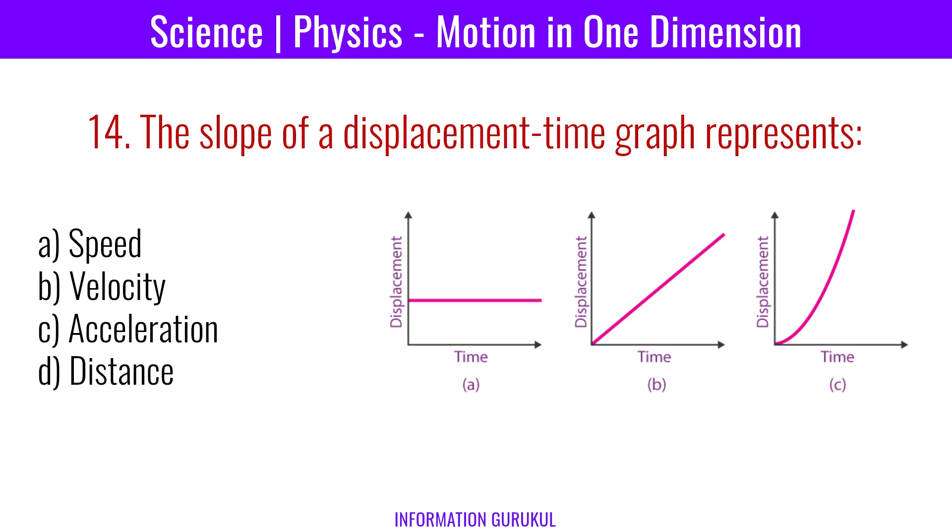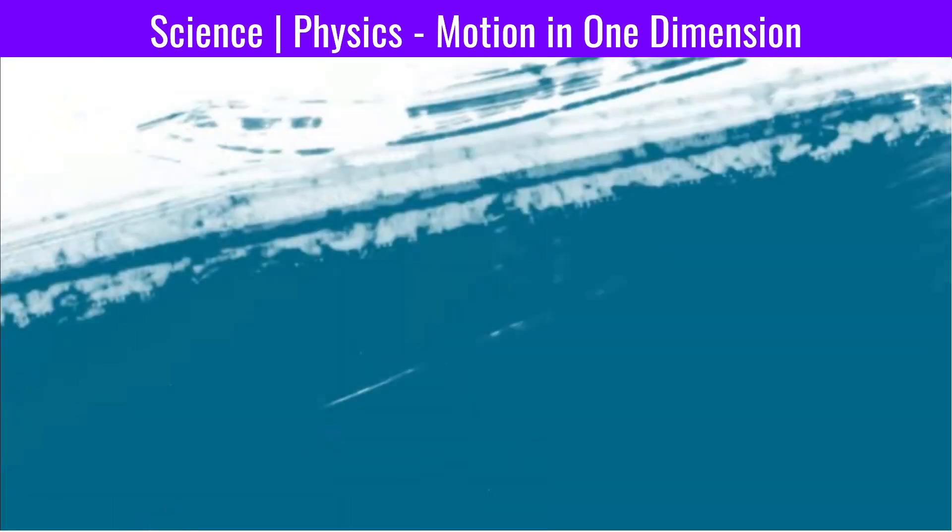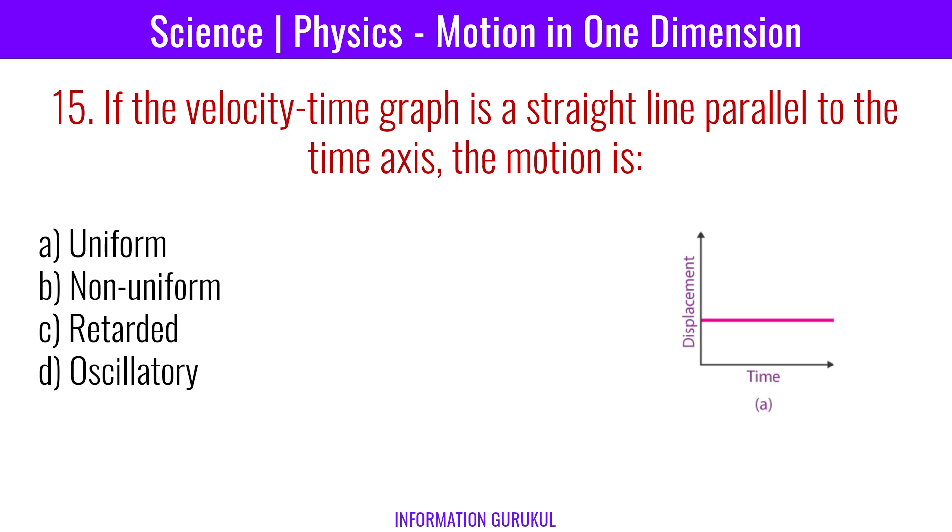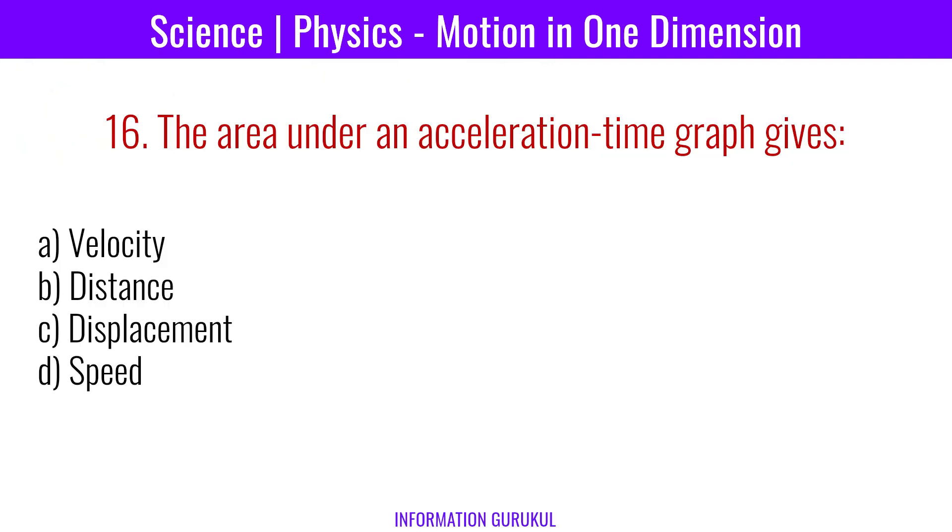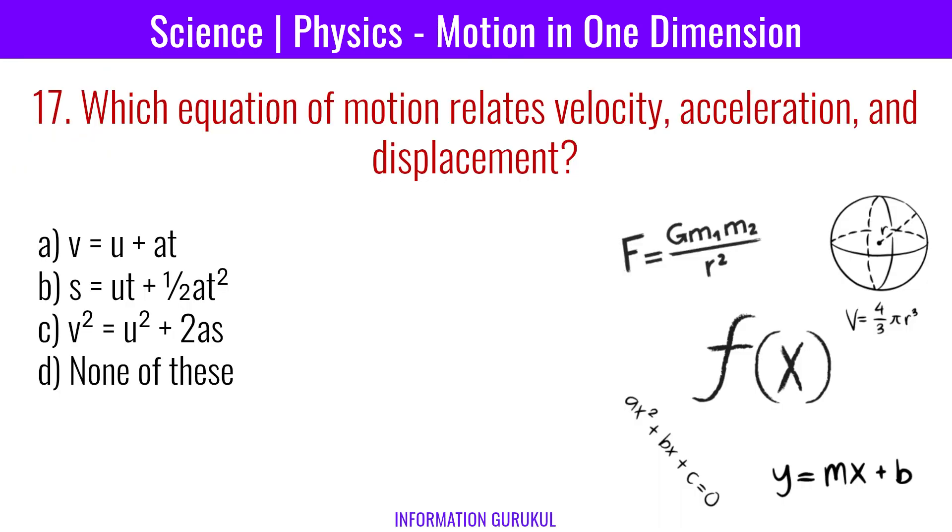If the velocity-time graph is a straight line parallel to the time axis, the motion is uniform. The area under an acceleration-time graph gives velocity. Which equation of motion relates velocity, acceleration, and displacement?